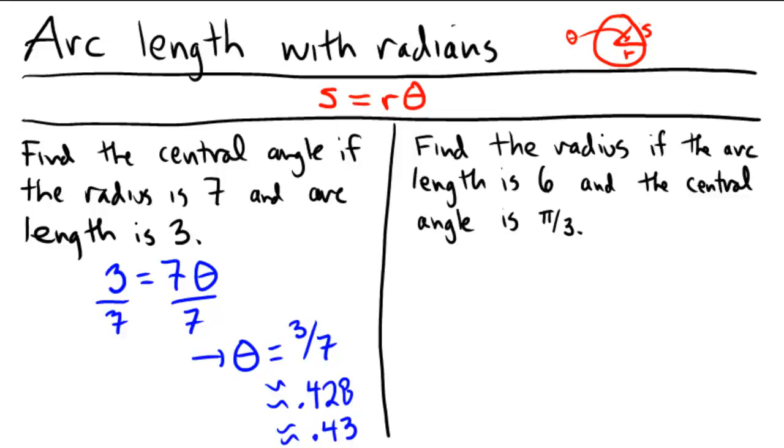Let's try the one on the right then. It says find the radius if the arc length is 6 and the central angle is pi over 3. So arc length s is known, that's 6, equals... Radius is not known, that's what we're looking for, so we're going to keep an r there. And our central angle is theta, which is pi over 3.